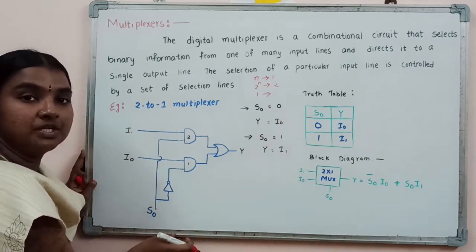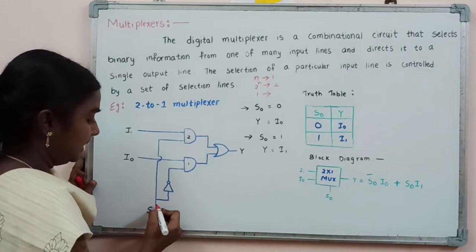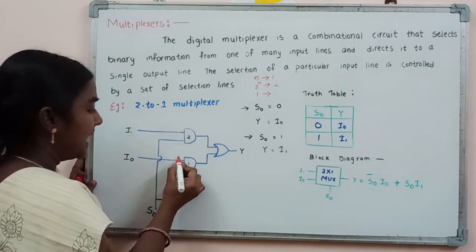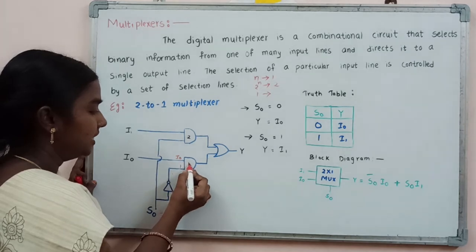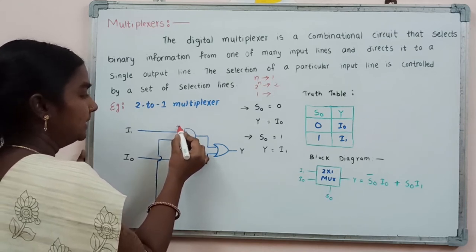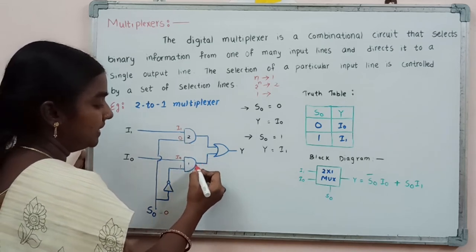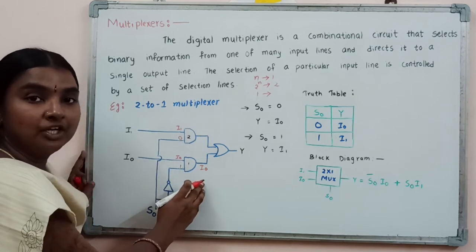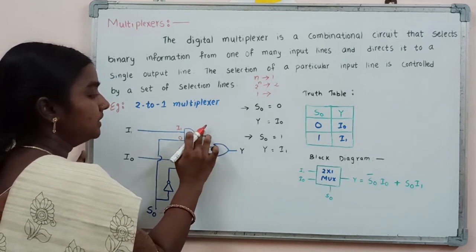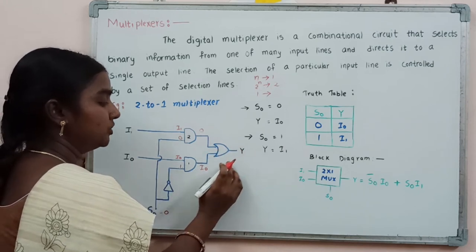When s0 equals 0, the NOT gate output applied to the first AND gate becomes 1, and i0 is the second input to that AND gate. For the second AND gate, one input is 0 (s0 directly) and the other input is i1. The output of the first AND gate is i0, since AND is like multiplication, and the second AND gate output is 0. When these two outputs are fed to the OR gate, the final output y equals i0.